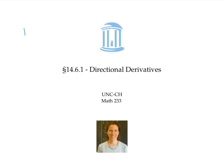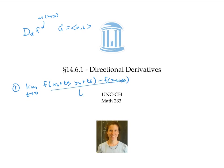In this video, we defined the directional derivative of f in the direction of the unit vector u in three different ways. First, as the limit as t goes to zero of f(x₀ + ta, y₀ + tb) minus f(x₀, y₀), all over t. That definition came from the idea of looking at average rates of change along vectors of the form t times u for smaller and smaller values of t. The second definition was the calculus-one derivative of the function of t given by f(x₀ + at, y₀ + bt), evaluated at t equals zero.